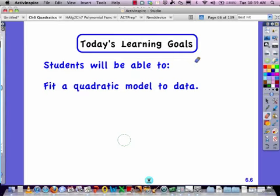Okay, we're moving into section 6.6, which says fitting a quadratic model to data. We know how to complete the square, we know how to change from vertex form to standard, we know how to go from standard to vertex.